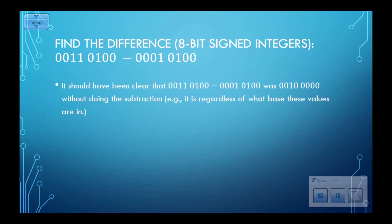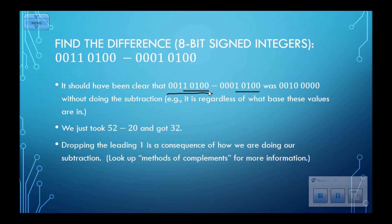Just a couple of notes. It should have been obvious that that's what the answer was going to be. I had this thing, I was subtracting the number that was this thing, so I should have gotten 0010 0000. In reality, we just took 52 and subtracted 20 and got 32. You can check that out by converting those binary signed integers to decimal numbers. And then dropping the leading one is just a consequence of how we're doing the subtraction. If you want to check out the method of complements, that'll tell you how that works, at least for positive numbers like we just worked with.